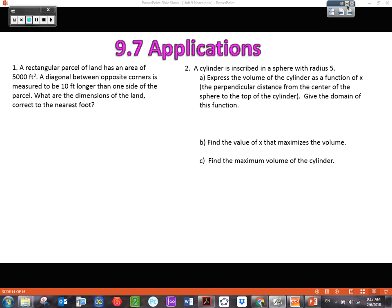The first one: a rectangular parcel of land has an area of 5000 ft². A diagonal between opposite corners is measured to be 10 feet longer than one side of the parcel. What are the dimensions to the nearest foot? I like to draw a diagram; that's very helpful in these types of problems. I decided to label that x and that y. My diagonal is 10 feet longer than one side, so I chose it to be 10 feet longer than the side x.